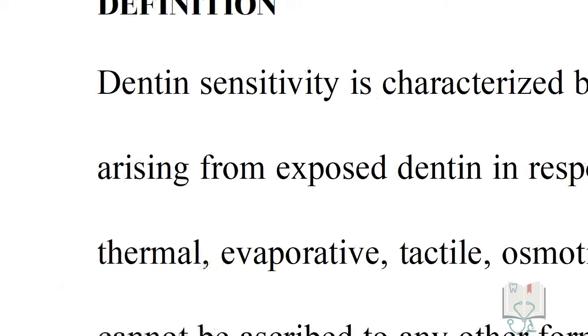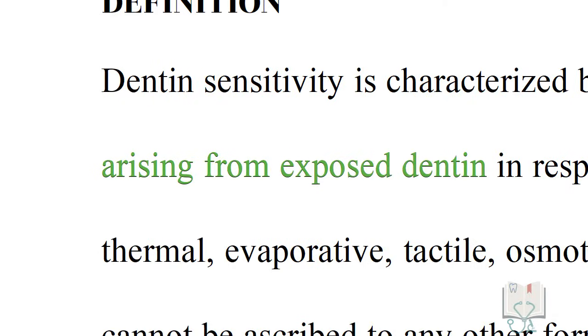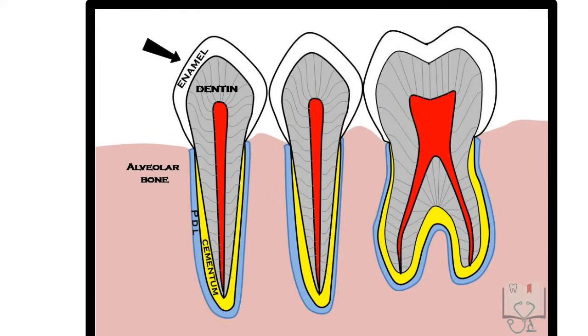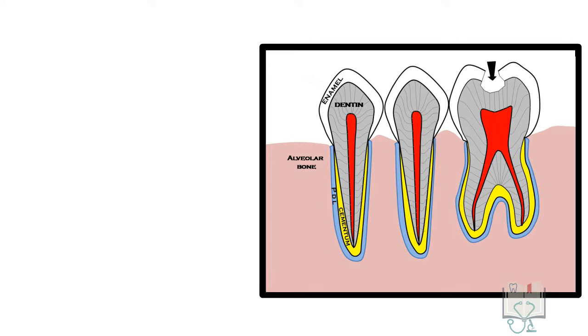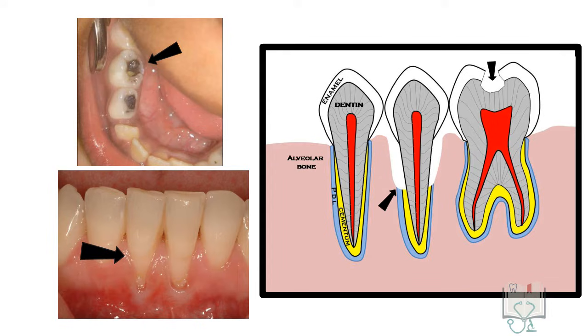It occurs only when dentin is exposed to the outside environment. In a healthy tooth, dentin in the crown is covered by enamel and in the root by cementum. Exposure of dentin may occur due to cavitation by caries or by any periodontal disease in which removal of periodontium causes exposure of root dentin.